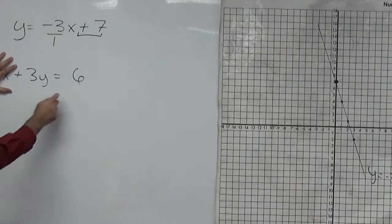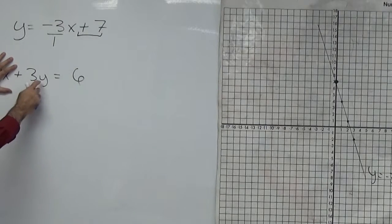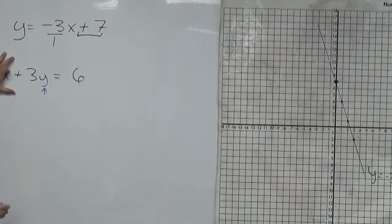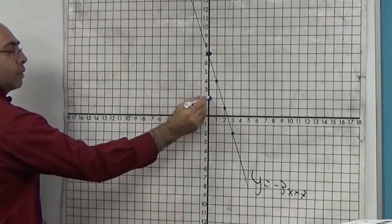What is y going to equal? Well, 3 times something equals 6. So in this case, when x is 0, y is equal to 2. So when x is 0, y is equal to 2.